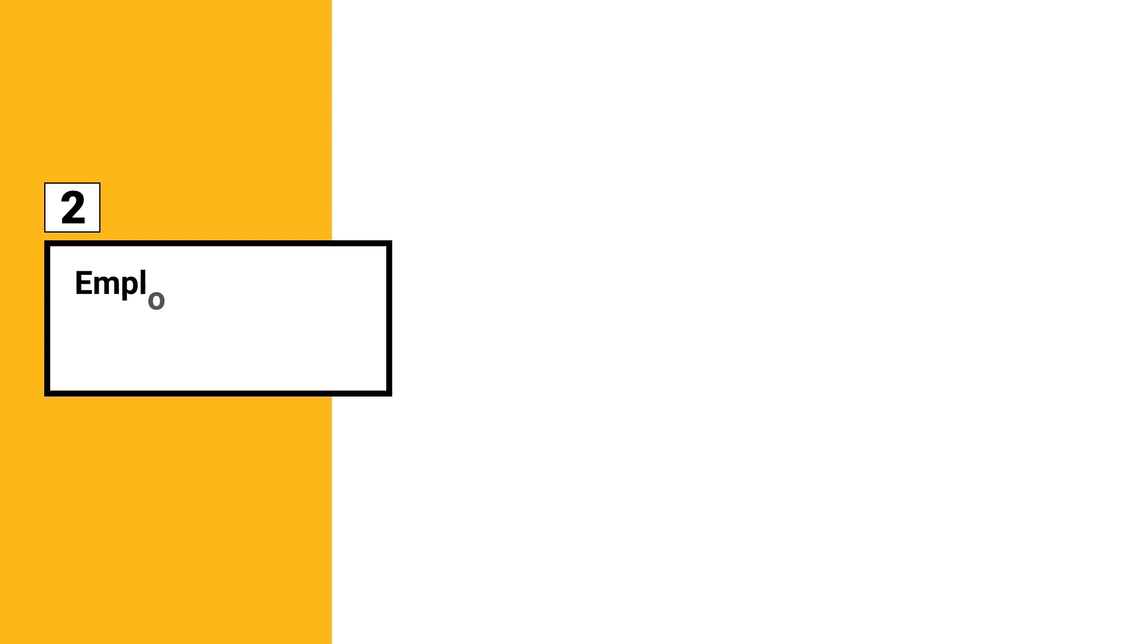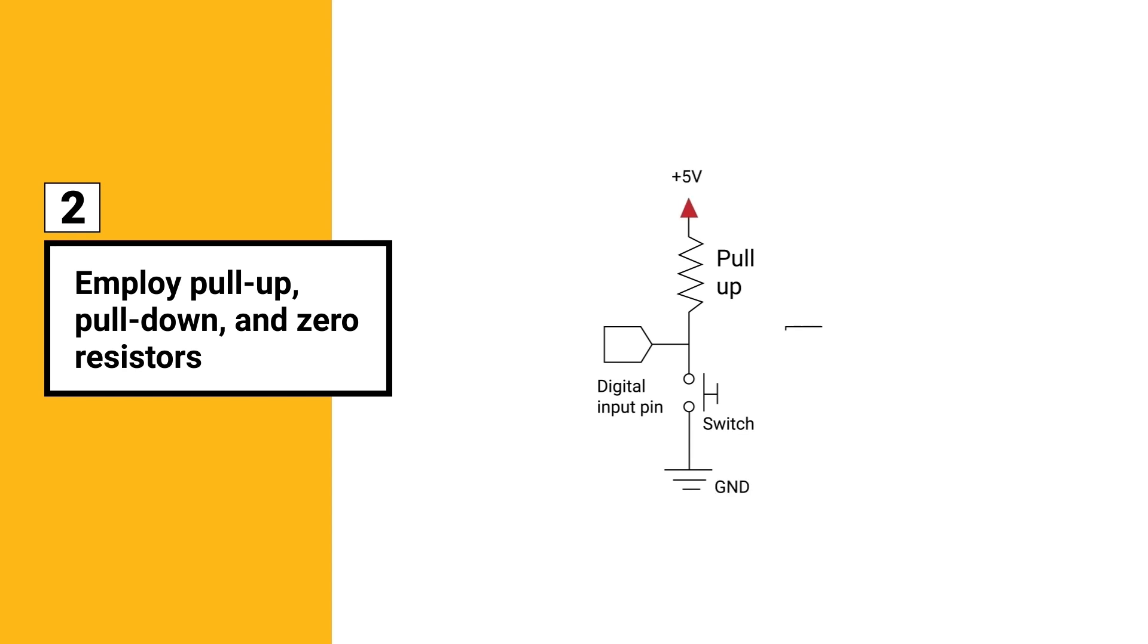Two: employ pull-up, pull-down, and zero resistors. This will avoid the odd effects of your circuit's floating state. Zero ohm resistors can be used to modify the circuit even after its construction. These resistors are used as a bridge to route tracks optimally on a board.